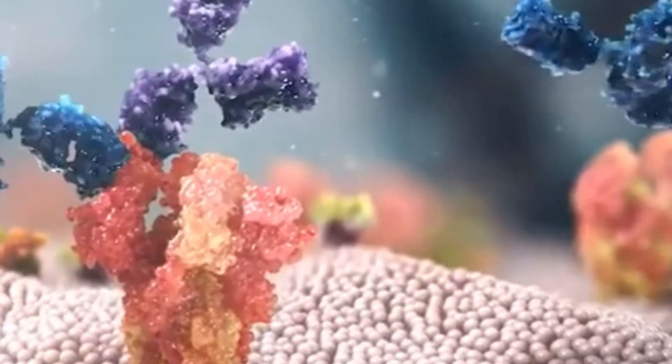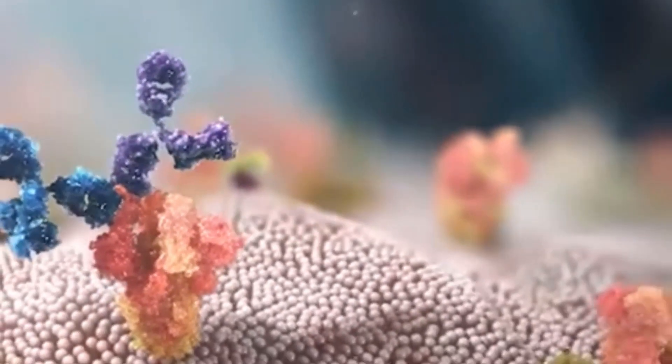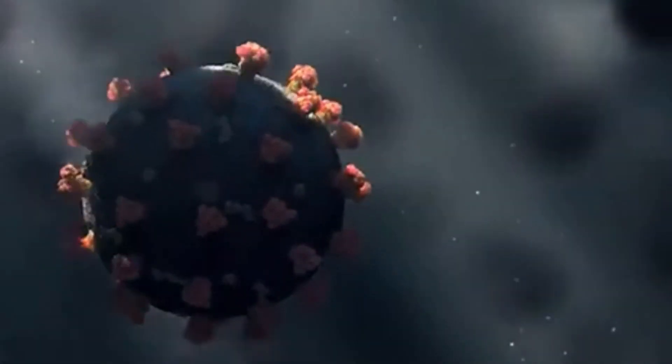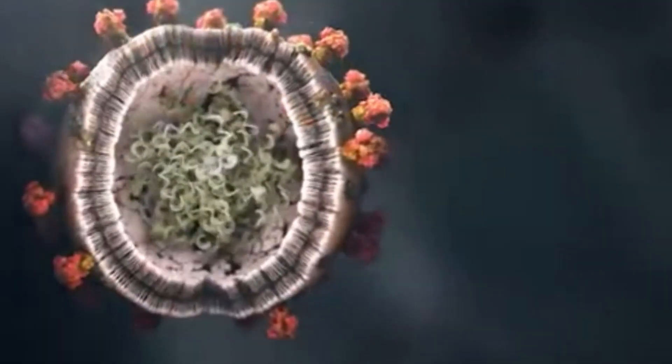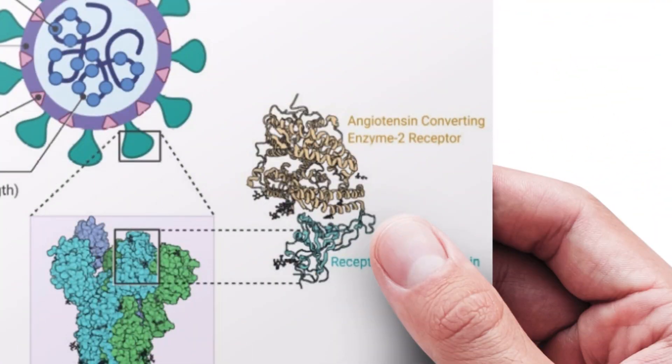However, new mutated variants have the ability to become more resistant and bypass your first and second lines of defense. When that happens, they can get into your alveoli and bind to the receptors on those cells. The coronavirus can bypass your defenses, enter your lungs, and bind to the specific receptor known as the angiotensin-converting enzyme 2 (ACE2) receptor.